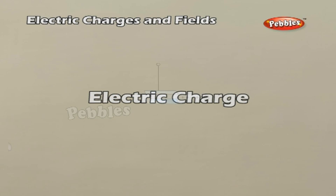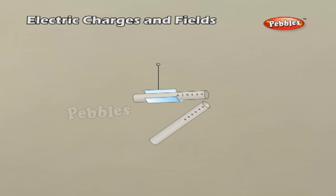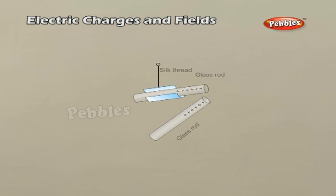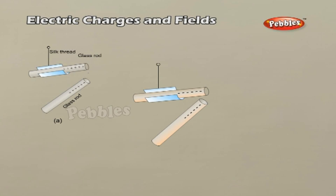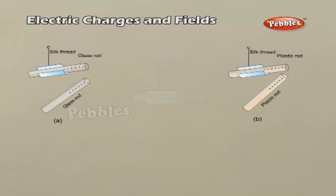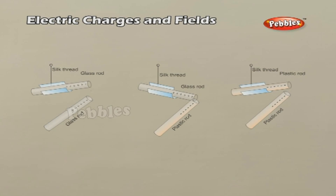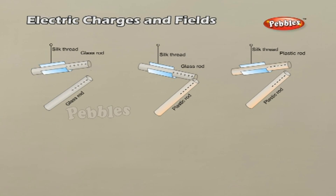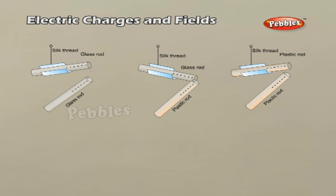Electric Charge. If two glass rods rubbed with wool or silk cloth are brought close to each other, they repel each other, as shown in figure A. Two plastic rods rubbed with cat's fur repelled each other in figure B but attracted the fur. The plastic rod attracts the glass rod in figure C and repels the silk or wool with which the glass rod is rubbed. If a plastic rod rubbed with fur is made to touch two small pith balls suspended by silk or nylon thread, the balls repel each other as in figure D.